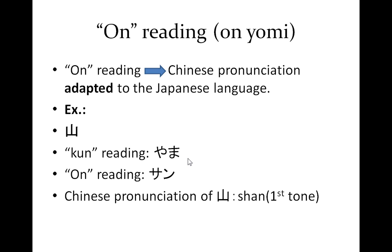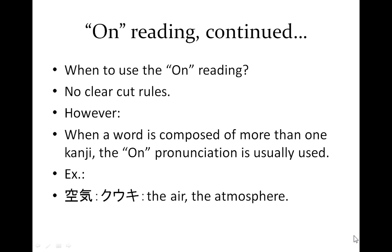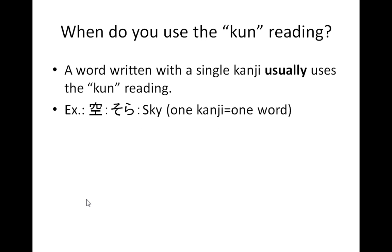You're probably asking yourself: when am I supposed to use the on reading and when the kun reading? Well, there are no clear-cut rules. However, when a word is composed of more than one kanji, the on pronunciation is usually used. For instance, kuki, composed of two kanjis, means the air or atmosphere, and you would use the on pronunciation for both. A word written with a single kanji usually, but not always, uses the kun reading — like this character used by itself, where you use the kun reading sora, meaning the sky.